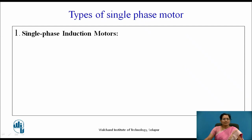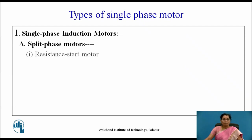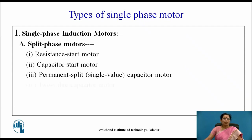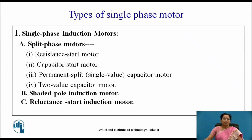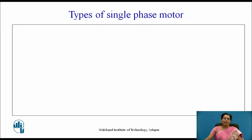First let us see about the types of single-phase induction motors. Single-phase induction motors has basically four types. Split-phase motors, which has again four types: resistance start motor, capacitor start motor, permanent split capacitor motor, two-value capacitor motors. Then shaded pole induction motor, reluctance start induction motor, and repulsion start induction motor.